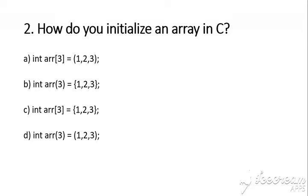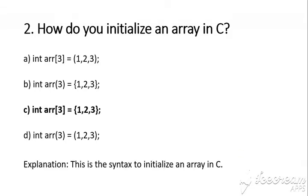Question number 2: How do you initialize an array in C? The answer is C, that is: int array[size_of_array] = { elements }. This is the syntax to initialize an array in C.